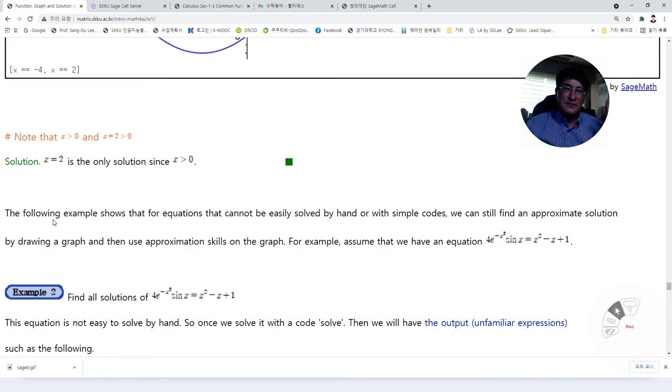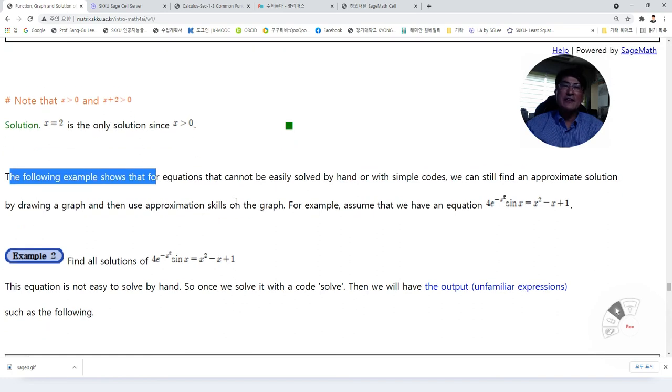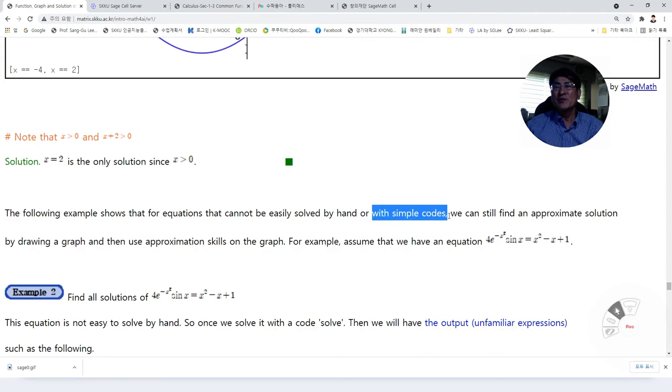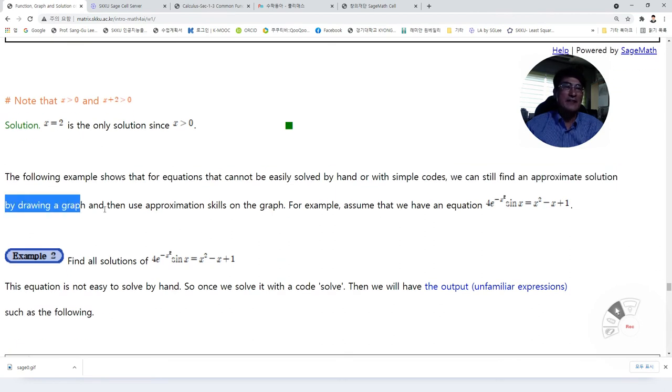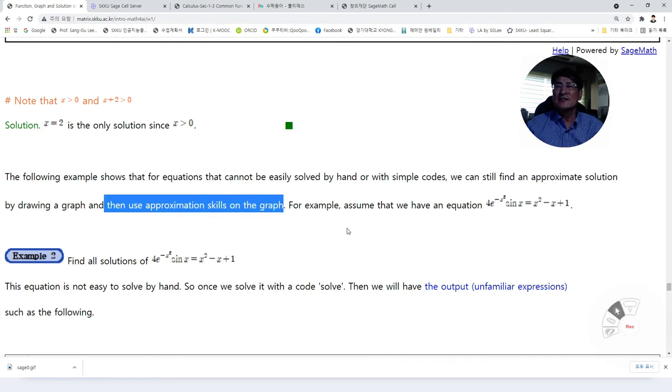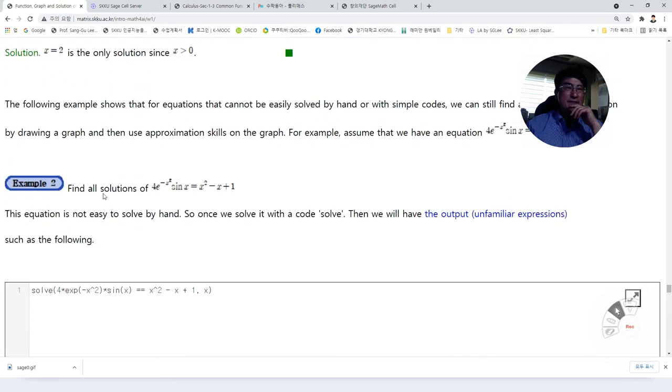Something like that. So that's the important part that we can use code. When we use the computer to save the complexity and the time. The following example shows that for equations that cannot be easily solved by hand or with simple code. In that case, we can still find an approximate solution by drawing a graph and then use approximation skills on the graph. For example, assume that we have equations like this. You never learned how to find the solution of this. But sometimes in AI, we need to find the solution of this kind of complex functions of composite functions.